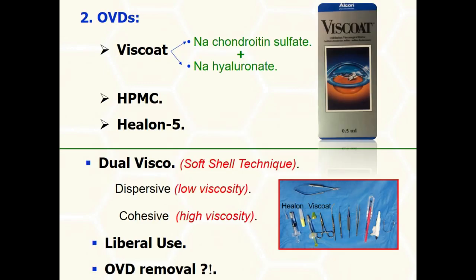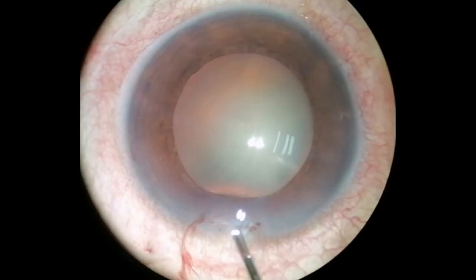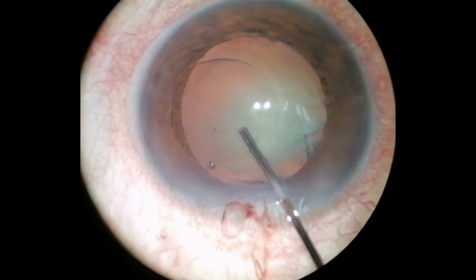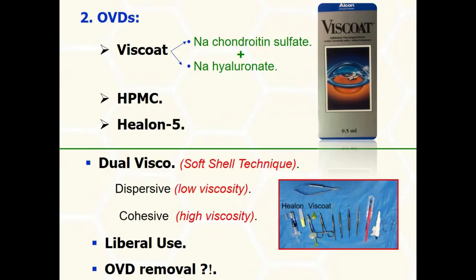Regarding the OVD strategy: because Viscoat contains chondroitin sulfate — the best endothelial coating substance — and is highly retentive in the anterior chamber, it is recommended for use especially in high-risk eyes. The soft-shell technique is helpful in these cases; Viscoat protects the endothelium and Healon facilitates the anterior capsulorhexis. Dispersive OVD should be used frequently throughout the operation, but avoid complete filling of the anterior chamber, as it may clog the phaco needle port, heating the wound. Ensure complete viscoelastic removal at the end of the operation except in compromised endothelium.